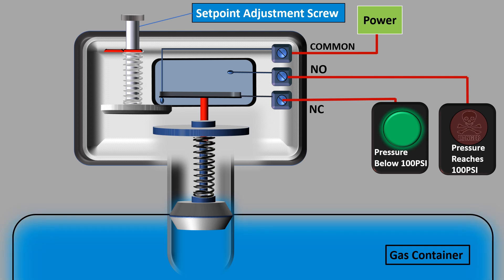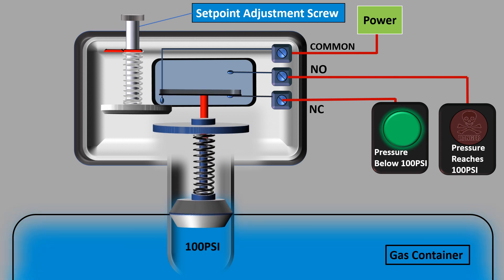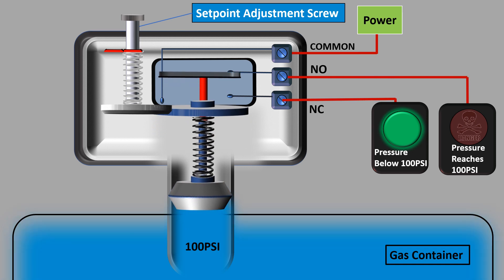We had already adjusted the tension of the range spring using set point adjustment screw so that it gets compressed when the inlet pressure reaches the set point. So when the inlet pressure reaches 100 psi, the piston is forced upwards by the inlet pressure compressing the range spring, and the piston will hit the trip button on the micro switch and change it over.